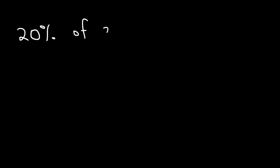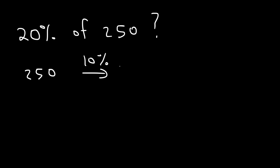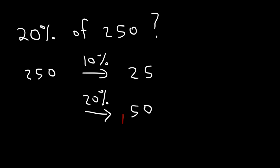For instance, let's say you want to find 20% of 250. See if you can do that mentally. Well, first start with 10% of 250, which is 25. So 20% of 250 has to be twice the value of 10%, because 10 times 2 is 20, and 25 times 2 is 50. Therefore, 20% of 250 is 50.